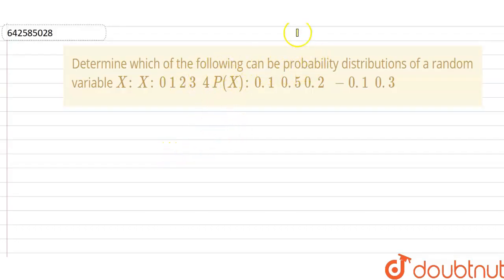determine which of the following can be a probability distribution of a random variable X, where X is 0, 1, 2, 3, 4 and